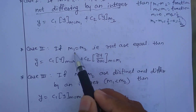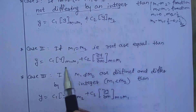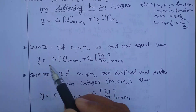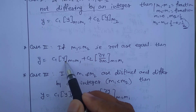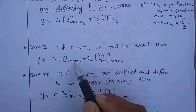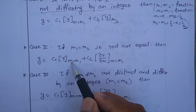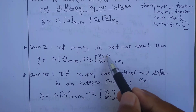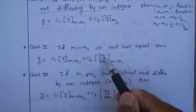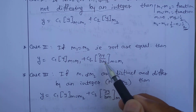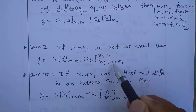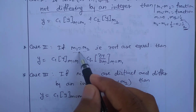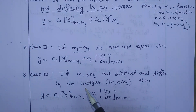Case 2: If m₁ = m₂ (equal roots), the solution is y = c₁·y(m=m₁) + c₂·(∂y/∂m)|_(m=m₁), where the second part involves the partial derivative of y with respect to m, evaluated at m = m₁.